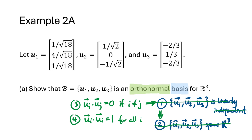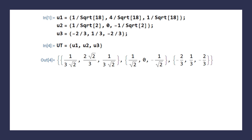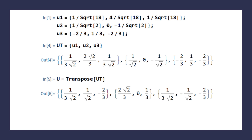We put these vectors into a matrix U and compute U transpose U, checking that we get the identity matrix. This time let's use Wolfram to save time. I've typed in the three vectors as a list — that gives U transpose, since Wolfram enters matrices one row at a time with each vector as a row. Then U is the transpose of U transpose. Multiplying U transpose times U, we do get the identity matrix, confirming these three vectors form an orthonormal basis for R3.